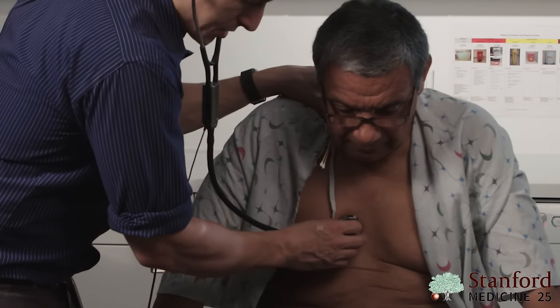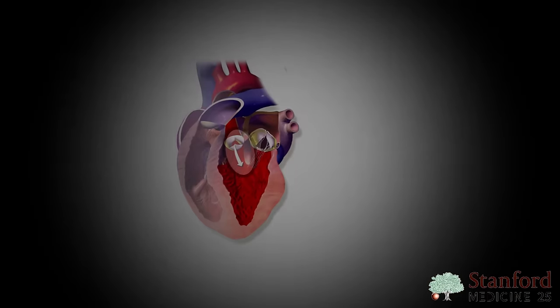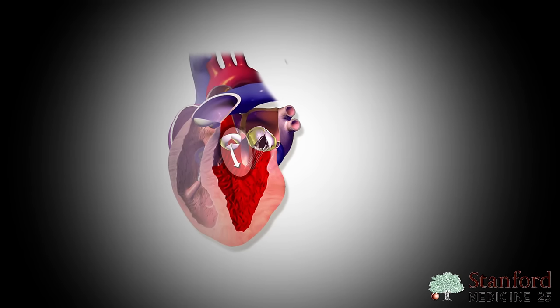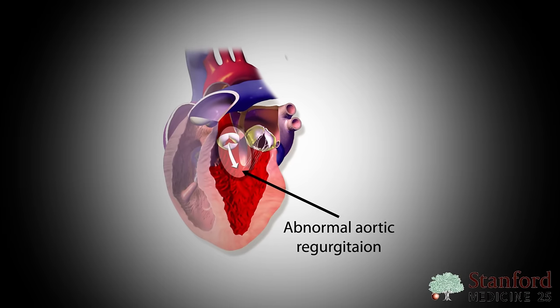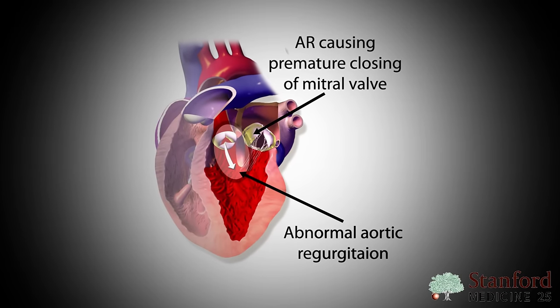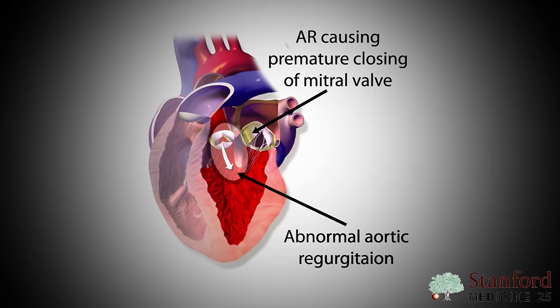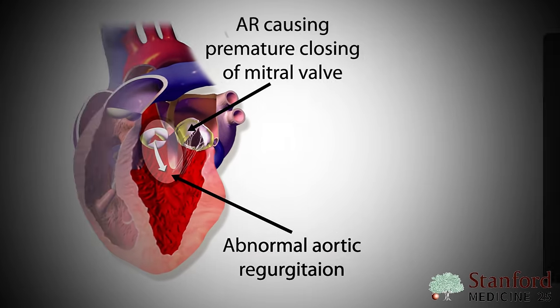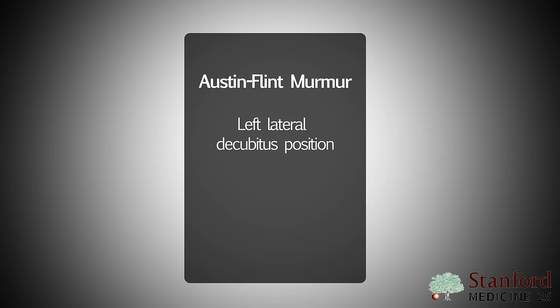One thing you might want to look for is the Austin-Flint murmur. The Austin-Flint murmur is believed to be caused by the downward jet of the aortic regurgitation murmur pressing on the mitral valve, which causes a functional mitral stenosis. Just like mitral stenosis, the best way to listen for it is to have your patient in the left lateral decubitus position, your stethoscope on the bell setting, and listen in the mitral region around the apex at intercostal space 5.